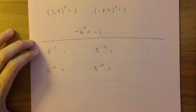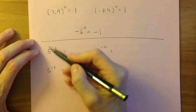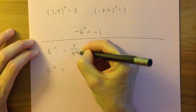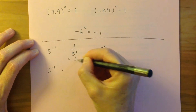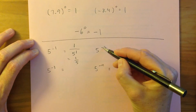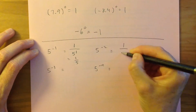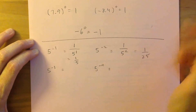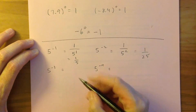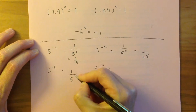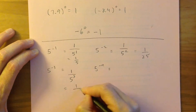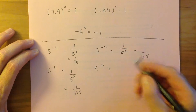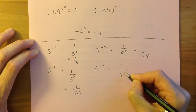Now let's talk about negative exponents. Let's look at these four examples. 5 to the power of negative 1 is defined to be 1 over 5 to the power of positive 1, which is the same as one fifth. 5 to the power of negative 2 is defined to be 1 over 5 to the power of positive 2, so that's going to equal 1 over 25. 5 to the negative 3 is defined to be 1 over 5 to the positive 3, so that's going to be 1 over 125. And in fact, 5 to the negative of any number n is going to be 1 over 5 to the power of positive n.